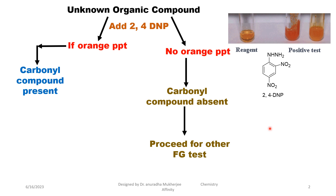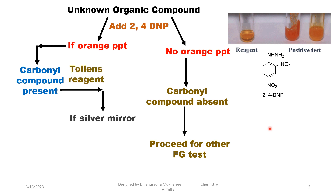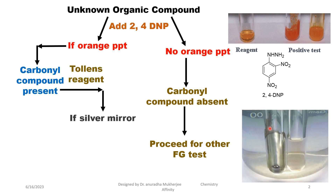So proceed for other functional group tests. Now add Tollens' reagent to the unknown organic compound which contains a carbonyl functional group, because we have to find out whether it is an aldehyde or a ketone.